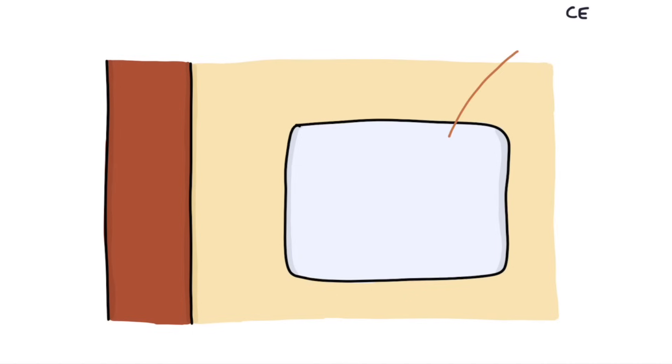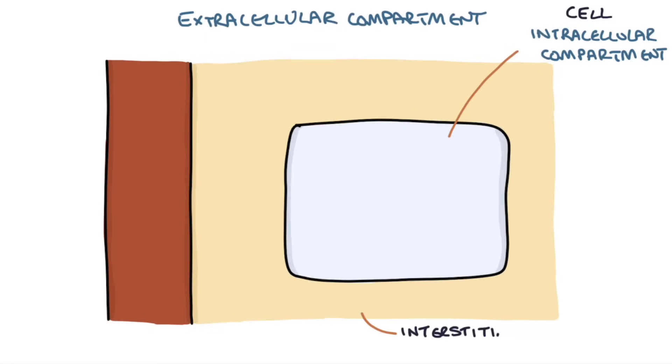Think of the fluid spaces in the body. You have the fluid inside the cells, called the intracellular compartment. Next, you have the fluid outside the cells, called the extracellular compartment. The extracellular compartment can be broken down into the interstitial compartment, which is the fluid that sits around the cells, and the intravascular compartment, which is the fluid inside the blood vessels.